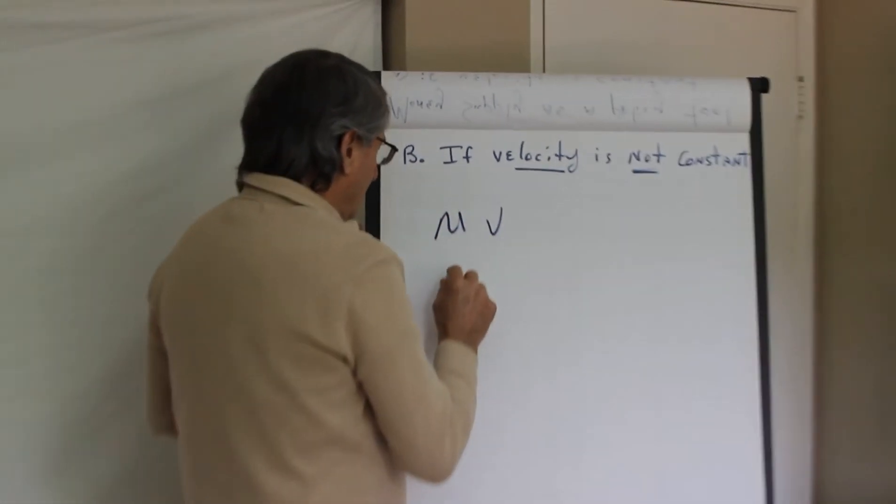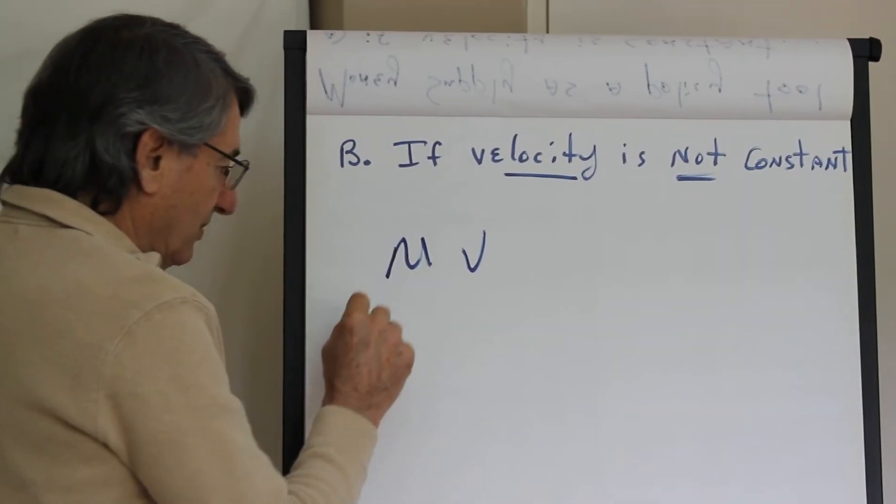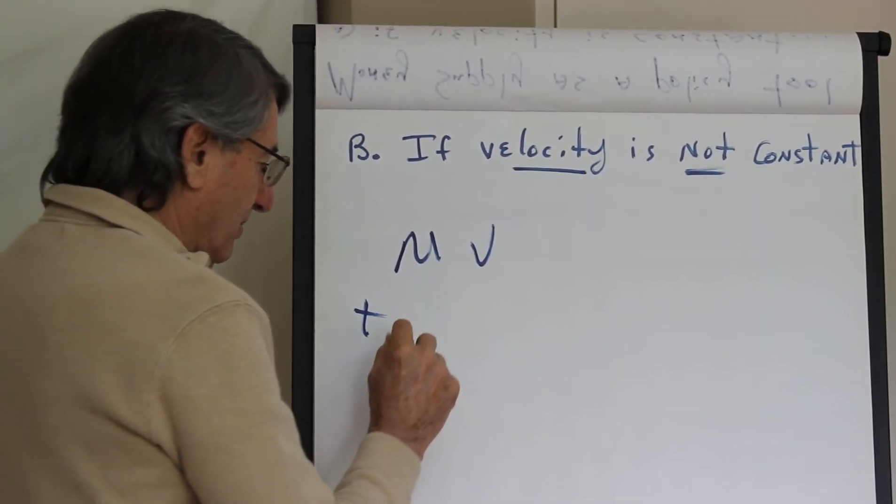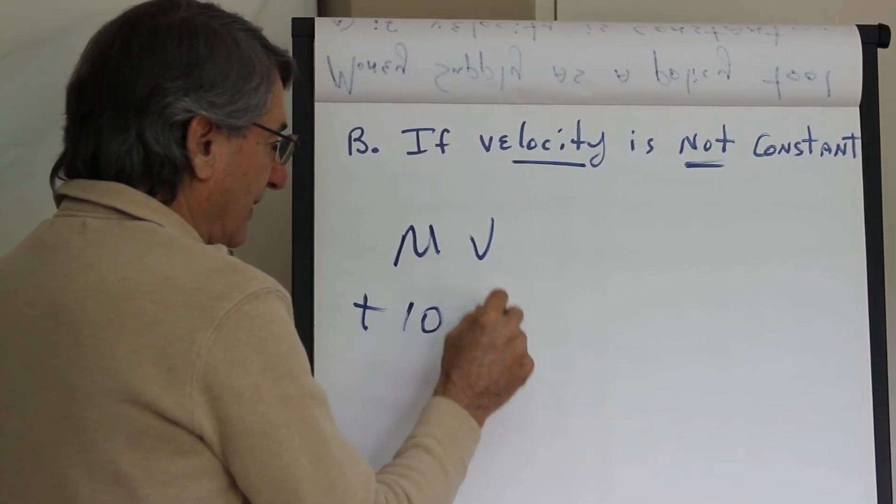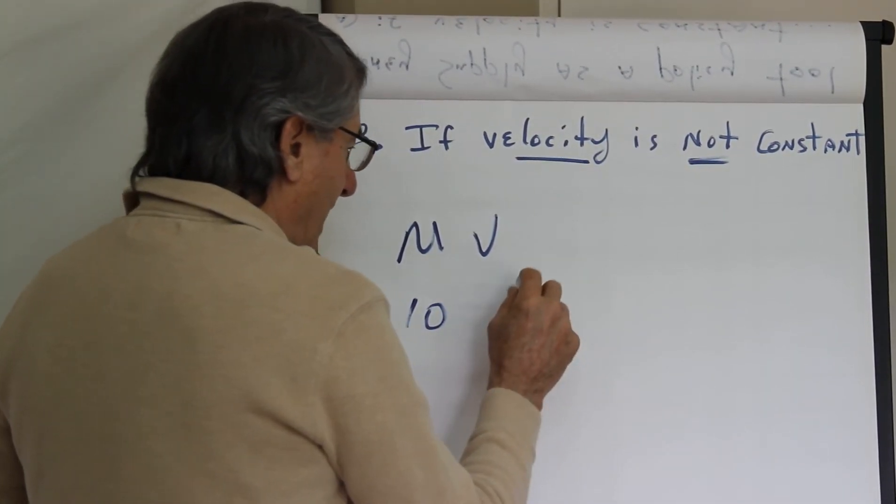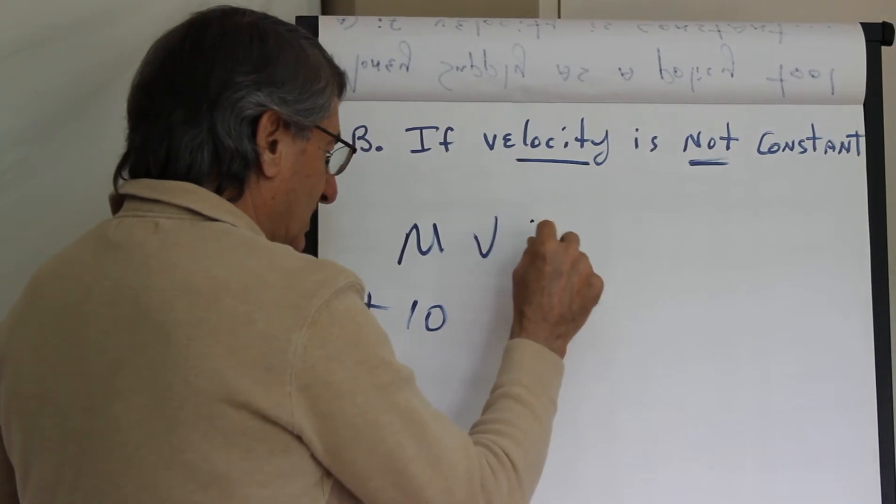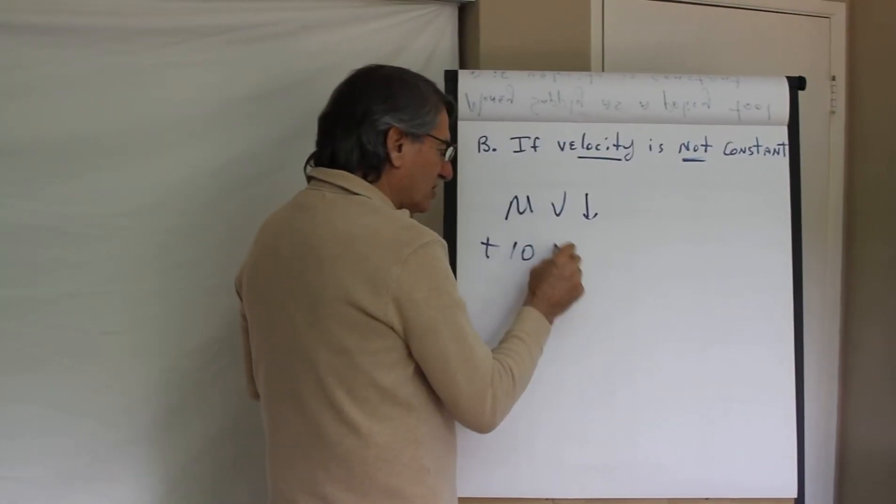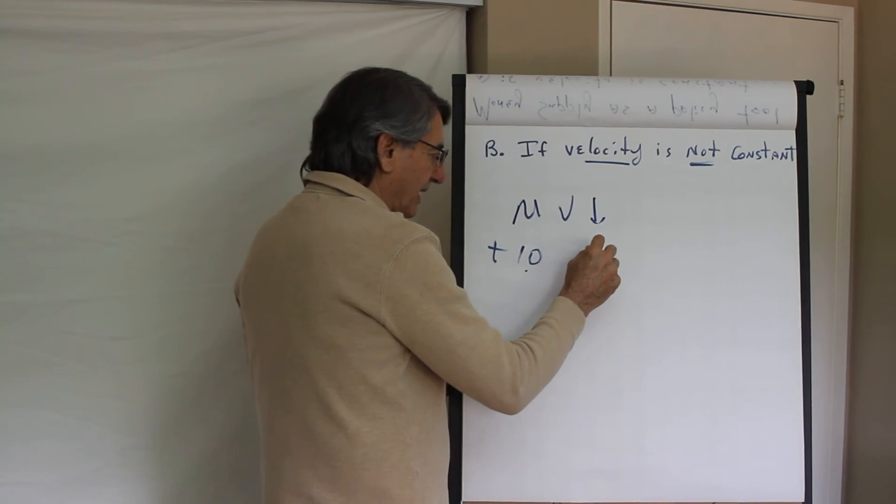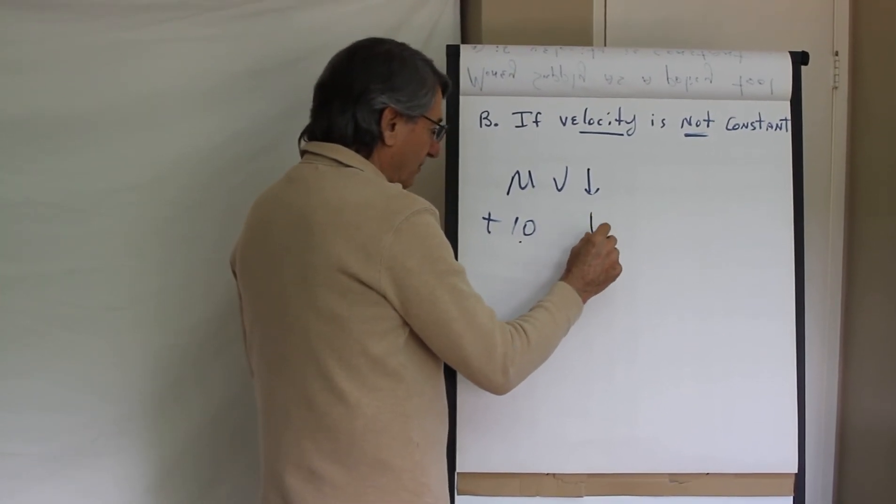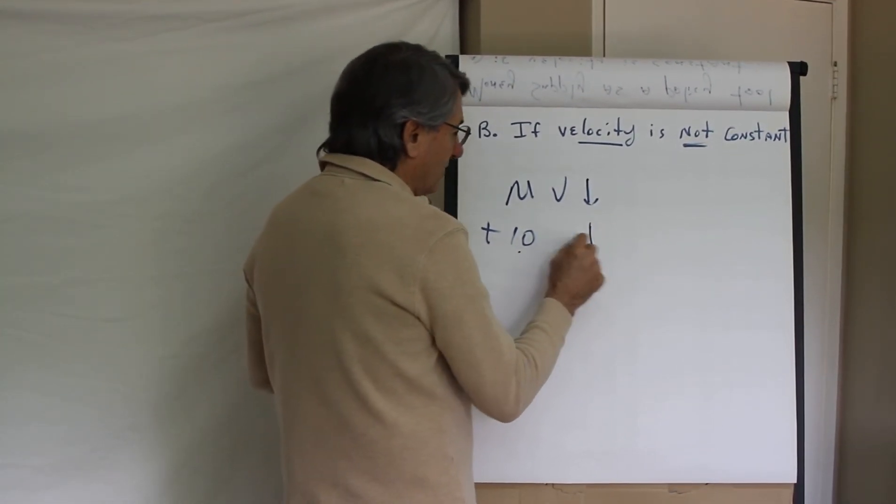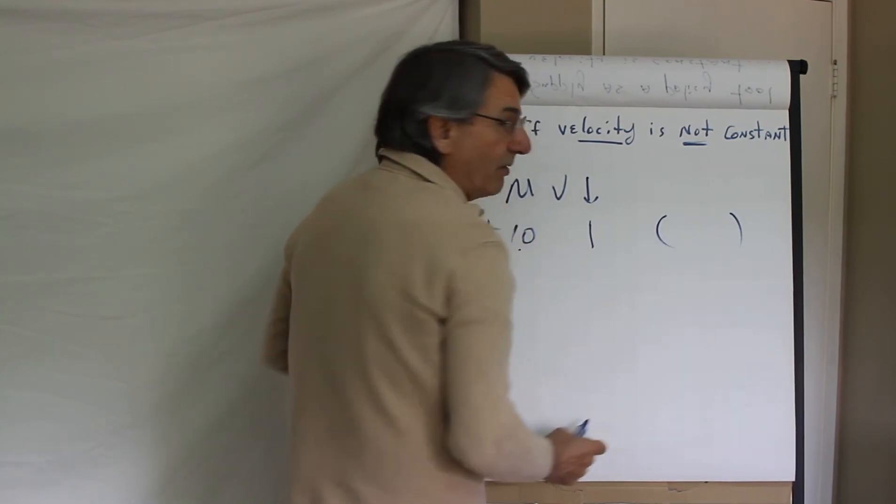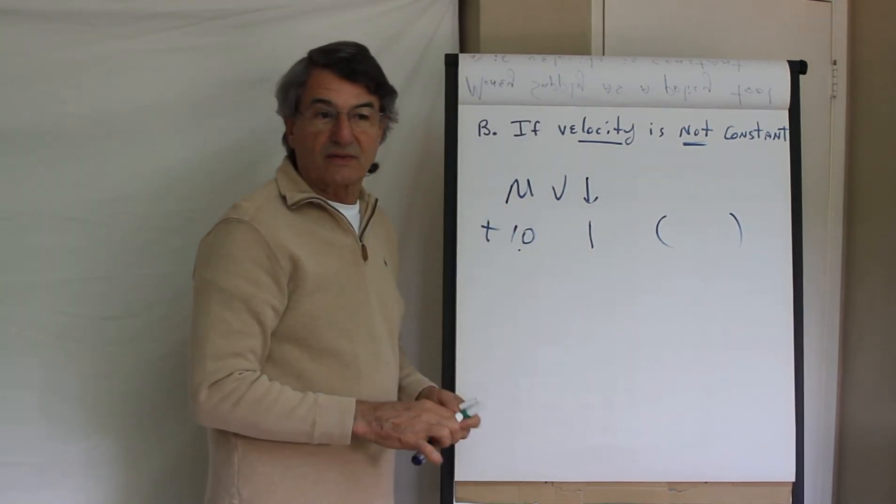If for instance the Federal Reserve tries to stimulate the economy and increases the money supply by 10%, but if velocity is decreasing, then there's a good chance that this increase in the money supply could be offset by the velocity decreases and there could be little or no change on the other side in terms of nominal GDP.